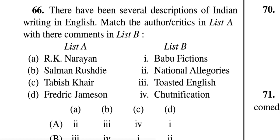In list A we have authors and critics, and in list B we have their comments. R.K. Narayan, Salman Rushdie, Tabish Khair, and Fredric Jameson — these are all important writers. It is your duty to know their literary works, how they have impacted Indian English, and also their biography, as many questions are often asked related to writers' biographies. In list B, we have comments like Babu Fiction, National Allegories, Toasted English, and Chutnification.